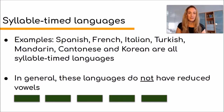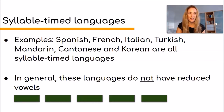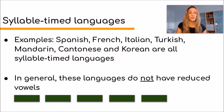What does that mean in practice? In general, syllable-timed languages do not have reduced vowels because we can always keep the same timing more or less. Examples of syllable-timed languages include Spanish, French, Italian, Turkish, Mandarin, Cantonese, and Korean. These are all examples of syllable-timed languages — there are of course more, but these are just a few listed here.